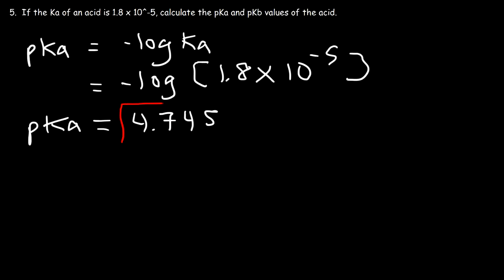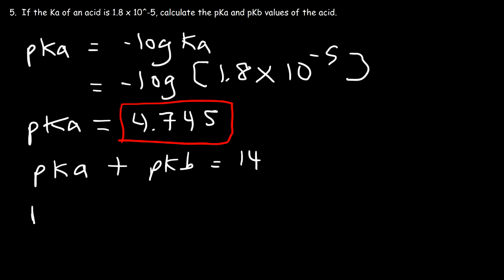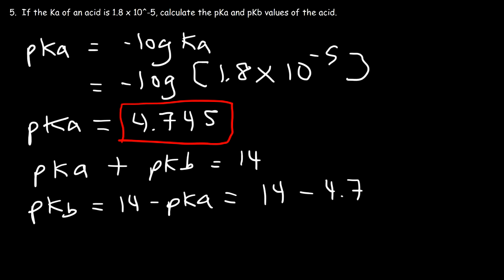Now let's focus on the pKb value. pKa plus pKb adds up to 14, so to calculate pKb, it's 14 minus the pKa value. That's 14 minus 4.745, and so the pKb value of this acid is 9.255.